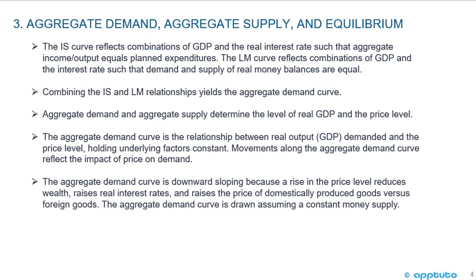Combining the IS and LM relationships yields the aggregate demand curve. Aggregate demand and aggregate supply determine the level of real GDP and the price level. The aggregate demand curve is the relationship between real output GDP demanded and the price level, holding underlying factors constant. Movements along the aggregate demand curve reflect the impact of price on demand. The aggregate demand curve is downward sloping because a rise in price level reduces wealth, raises real interest rates, and raises the price of domestically produced goods versus foreign goods. The aggregate demand curve is drawn assuming a constant money supply.